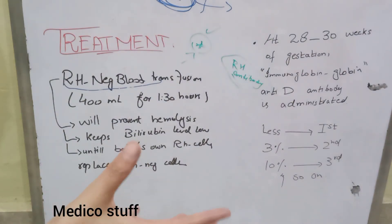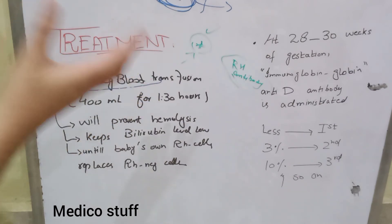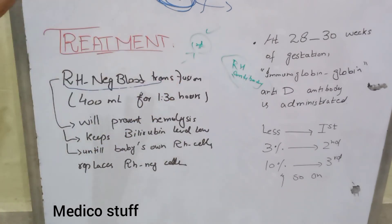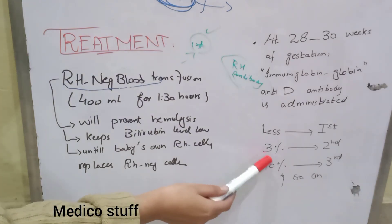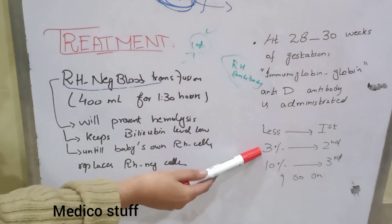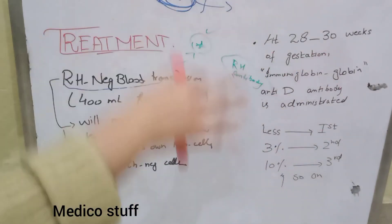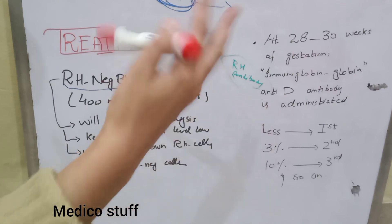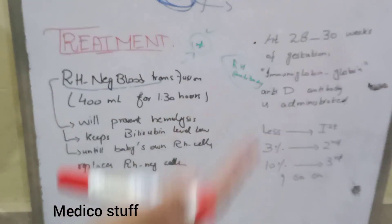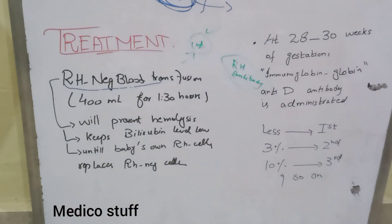After delivery, the baby's blood containing RH antigen gets entry into the mother's body, which stimulates the immune response. So there will be about three times more risk during the second pregnancy, and the risk continuously increases with each subsequent pregnancy.